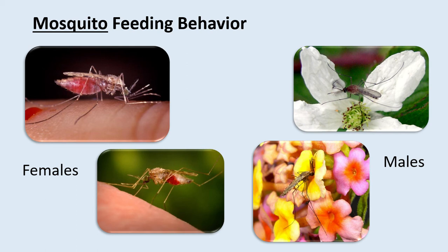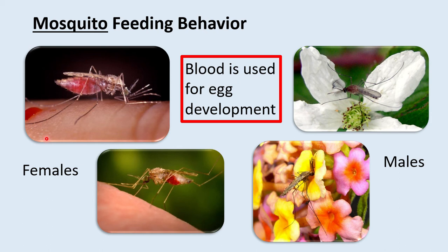Only females will take blood meals, and most mosquito species do take blood meals — we'll talk about one exception in a moment. Females take blood meals to supplement their nectar diet because the blood is used for egg development. Males only feed on nectar, but it is important to note that both males and females feed on nectar, so they are pollinators. There are many mosquitoes that pollinate rare plants, including orchids.